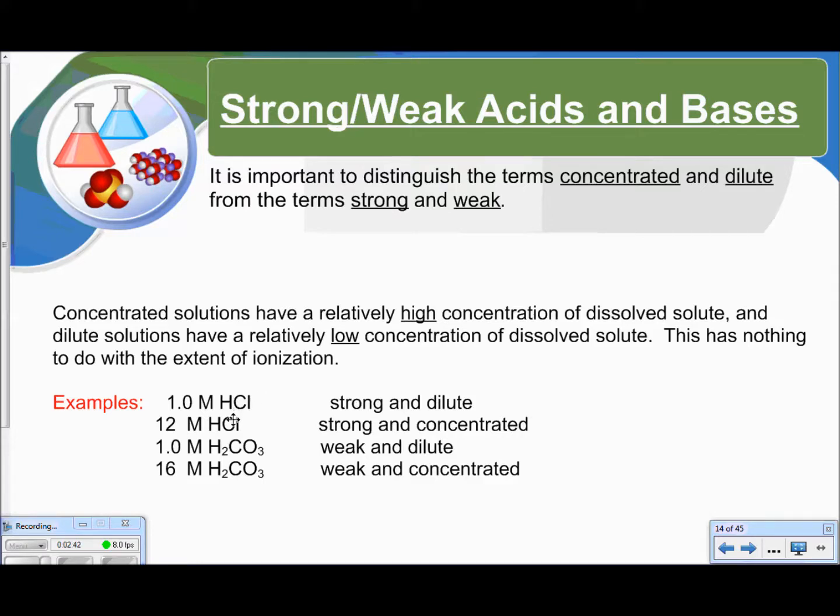If I have a 12 molar solution of hydrochloric acid, now this is still a strong acid, but now it's a concentrated solution, meaning there's a lot of solute dissolved in water there. A one molar solution of carbonic acid, that's a weak acid in a dilute solution because it's only one molar. And 16 molar is very concentrated, but still we've got carbonic acid, which is a weak acid. So it can be weak and concentrated as well.